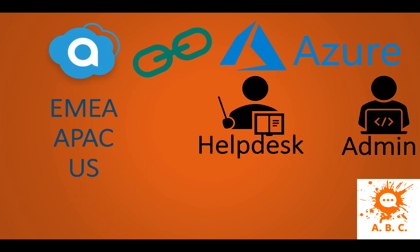In Aruba Central we're managing the different regions EMEA, APEC and US for the customer SD Branch, and we want to tie that together with the Azure Active Directory. The administrator should have access to all the groups and the help desk should only have access to the regions EMEA and APEC, since they're also located in EMEA.